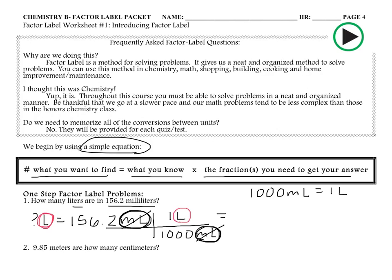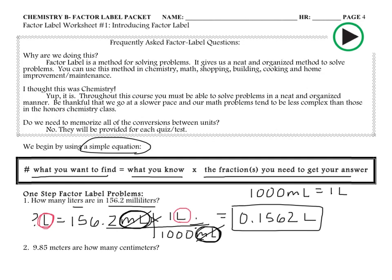When we do the math, numbers on the top of the picket fence get multiplied and numbers on the bottom get divided. So we do 156.2 times 1, then divide by 1,000. This gives us a final answer of 0.1562, and our units are liters. We box the final answer and move on to the next problem.